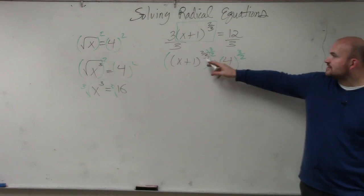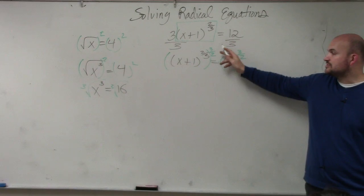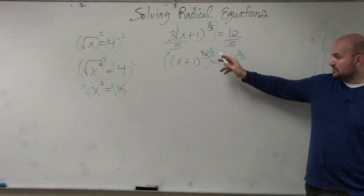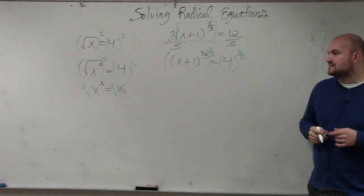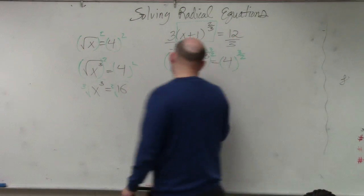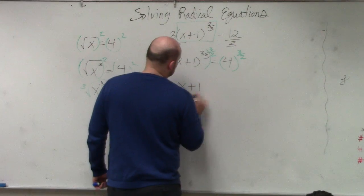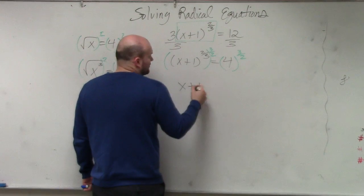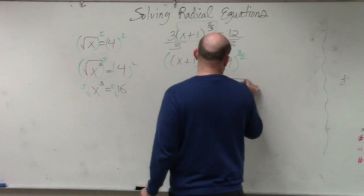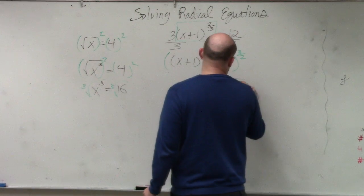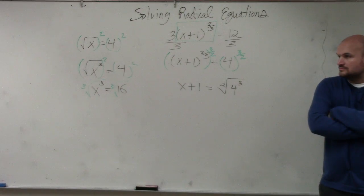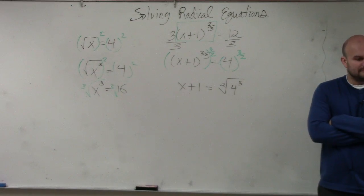What happens when you raise an exponent to another power? What do you do with the powers? You multiply them. What's 2 thirds times 3 halves? It's 1. So therefore, you have x plus 1 to the first power is equal to the square root of 4 cubed.